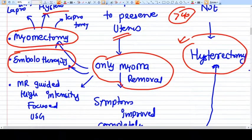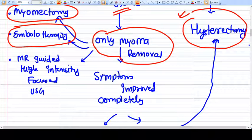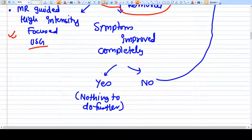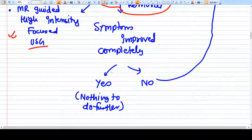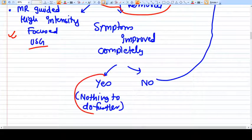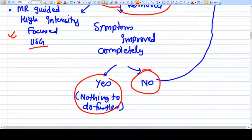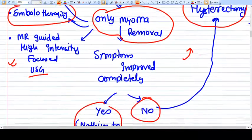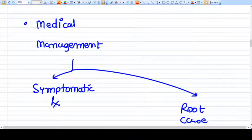There are very another treatment protocols like embolotherapy, which is another new treatment. Another new treatment is MR guided high intensity focused ultrasound, which throws ultrasound energy and destroys the fibroid. This is also an option, but again all these options, if the symptoms improve completely or not, if the symptoms are improved completely yes then you have nothing you have to do, but if it is not then again the hysterectomy is the last option. So this is how you decide management in myoma.